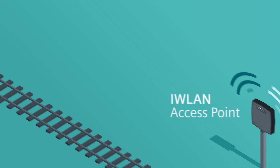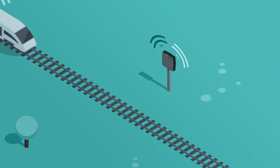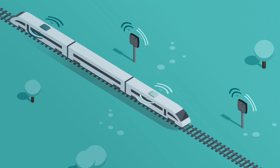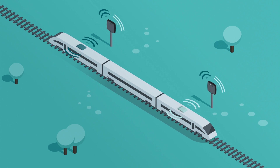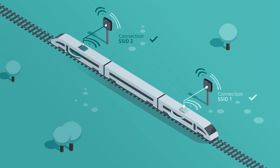Access points are installed along the train's route, with each opening two SSIDs. The clients are configured to connect to only one of the two SSIDs. In addition, IPRP ensures that the two clients never connect to the same access point. So Client 1 only connects with SSID 1 and Client 2 only with SSID 2. This prevents an interruption in the event of a fault.